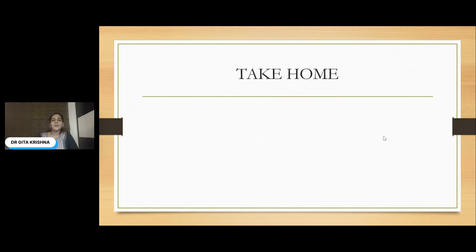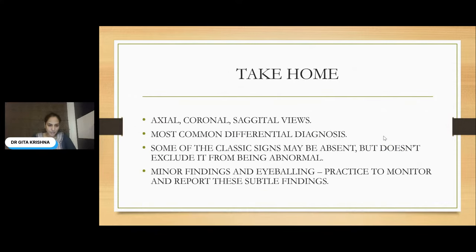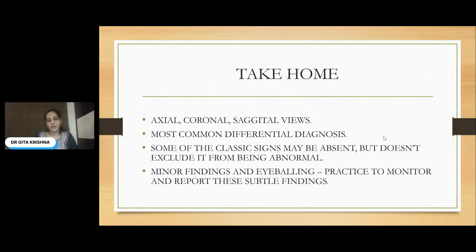My take-home points from today's spotters: make sure you screen each and every organ in axial, coronal, as well as sagittal views. If those views are not feasible, try parasagittal or paracoronal views, or whatever is possible, to get a clear 3D or 4D image. Always suggest the most common and nearest differential diagnosis. Some classic signs may be absent but that doesn't exclude the finding from being abnormal. Regarding minor findings and eyeballing — practice to monitor and report these subtle findings, because the more normal cases you see, the better your instinct becomes when something is wrong. Practice makes your eyeballing perfect.